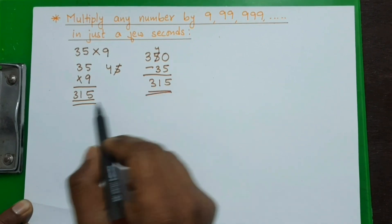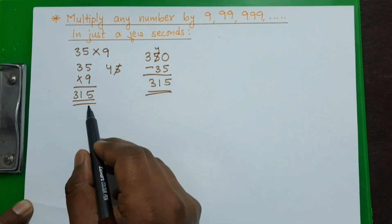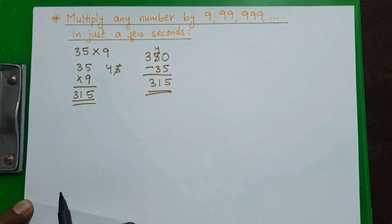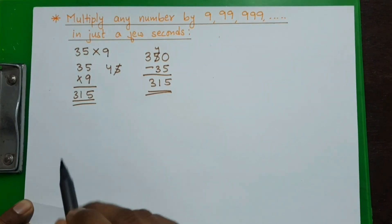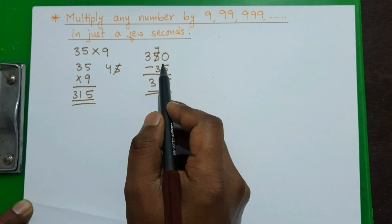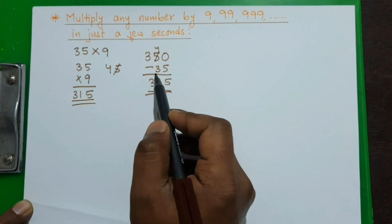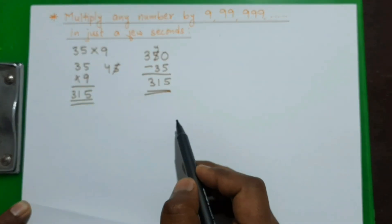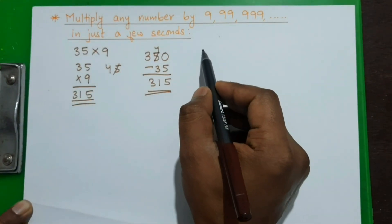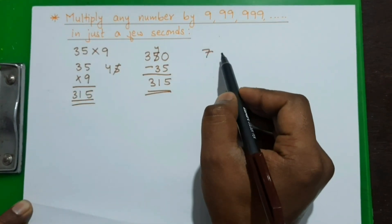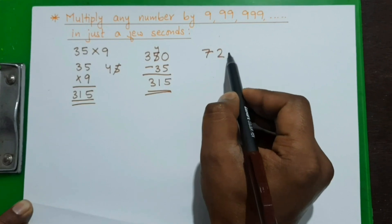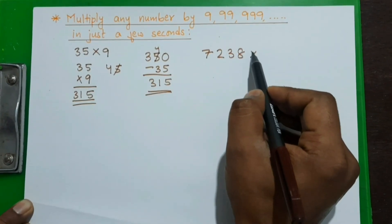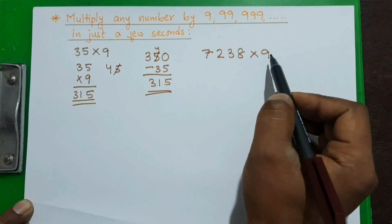We see that for small numbers both methods take almost the same time. But this short multiplication method is more useful when we are multiplying bigger numbers. Let us take a much bigger number: 7238, and multiply it by 9.